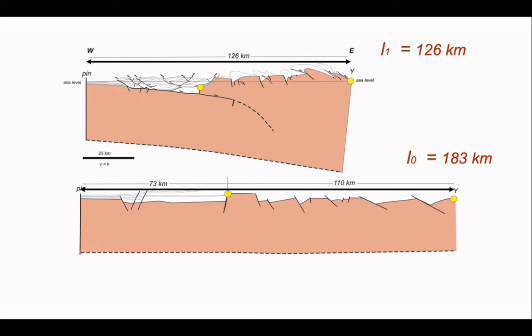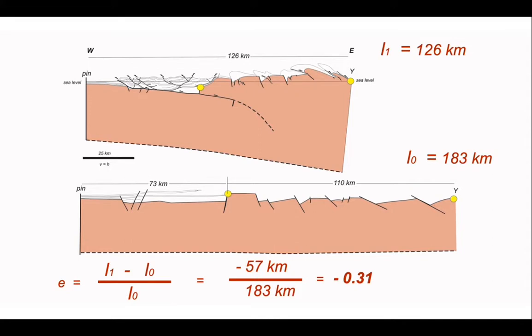These are the values. So L1 has a distance of 126 kilometres. L0 has a length of 183. We now just plug those values into our expression for elongation, which comes out like this. So the elongation here is minus 0.31. And that's for the whole cross-section.